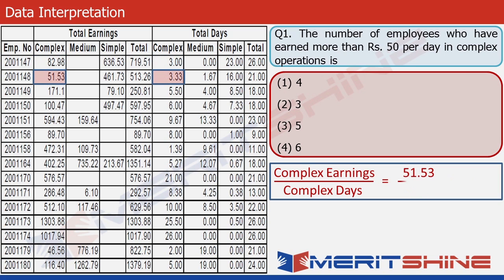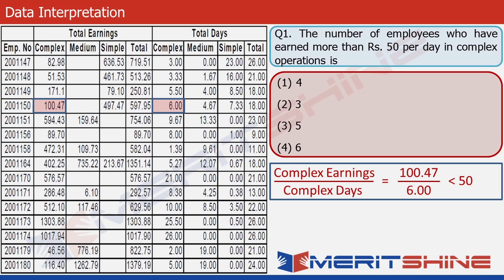Going through the employees quickly: 51.53 divided by 3.33 — less than 50. 171.1 divided by 5.50 — less than 50. 100.47 divided by 6.00 — less than 50. 594.43 divided by 9.67 — this is greater than 50. The denominator is less than 10, so 50 times it is less than 500, but the numerator exceeds 500, so the result is greater than 50. This is the first employee that qualifies.